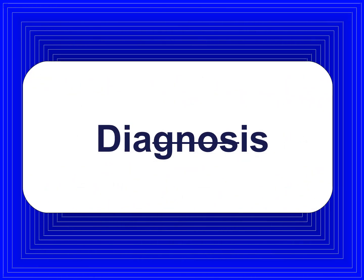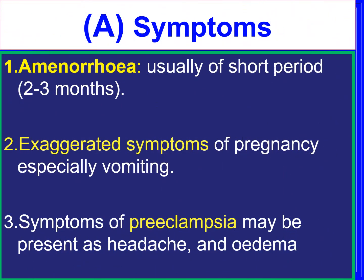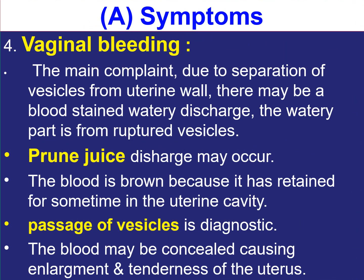The diagnosis of vesicular mole begins with symptoms. These include amenorrhea, usually for 2–3 months, along with exaggerated symptoms of pregnancy — especially vomiting. Symptoms of preeclampsia may be present, such as headache and edema. Vaginal bleeding is the main complaint and occurs due to separation of vesicles from the uterine wall. There may also be blood-stained watery discharges.